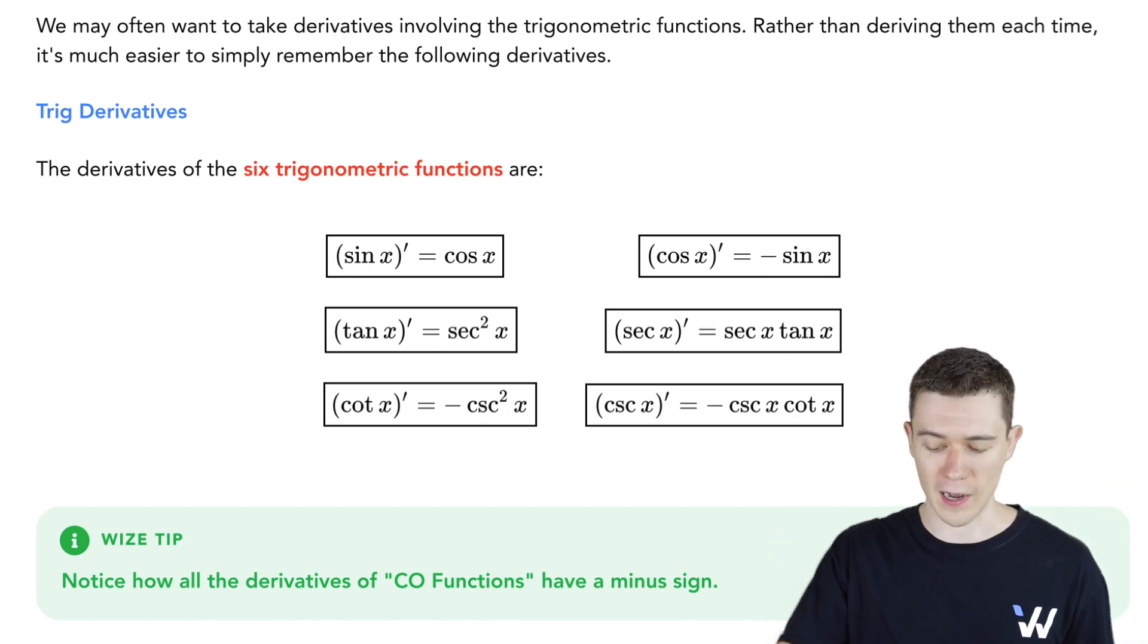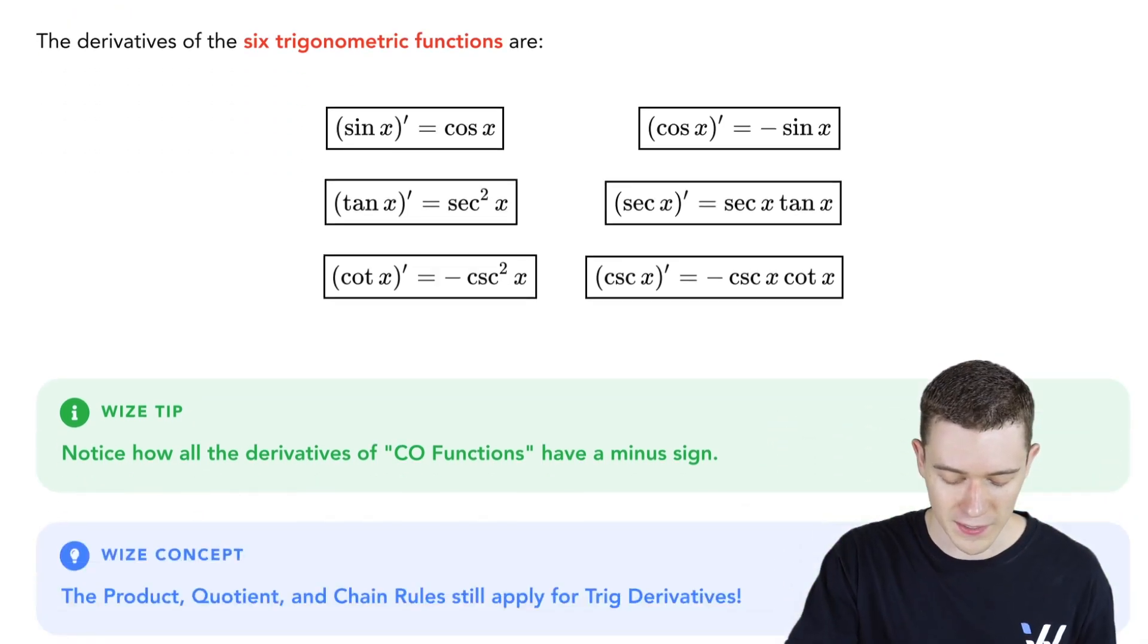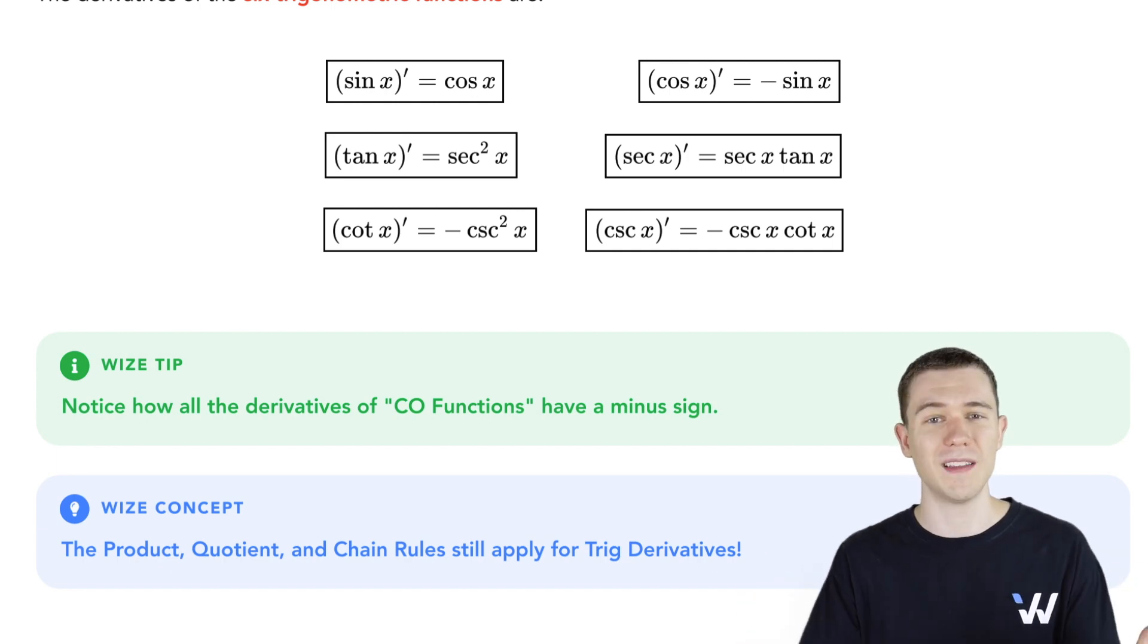So that might feel like a lot, but we have a few things to help us. Notice how all the co-functions, when you take their derivative, they have a minus sign. Anytime you take the derivative of a co-trig function, you should get a minus sign in front.